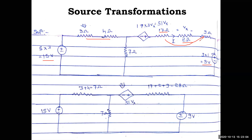Now we have series resistances to combine. In the first branch: 3 + 4 = 7 ohm. In the third branch: 17 + 2 + 9 = 28 ohm. The circuit is still not fully simplified, so next we convert the voltage sources in series back to current sources in parallel to eliminate the parallel resistances.